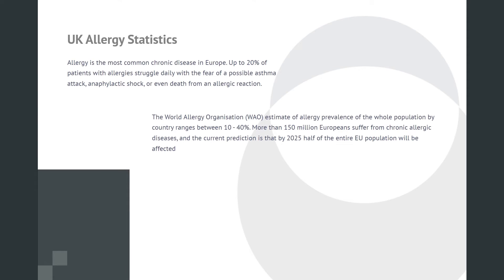UK allergy statistics. Allergy is the most common chronic disease in Europe. Up to 20% of patients with allergies struggle daily with the fear of a possible asthma attack, anaphylactic shock, or even death from an allergic reaction. The World Allergy Organization (WAO) estimates allergy prevalence by country ranges between 10 to 40%. More than 150 million Europeans suffer from chronic allergic diseases, and the current prediction is that by 2025 half of the entire EU population will be affected.